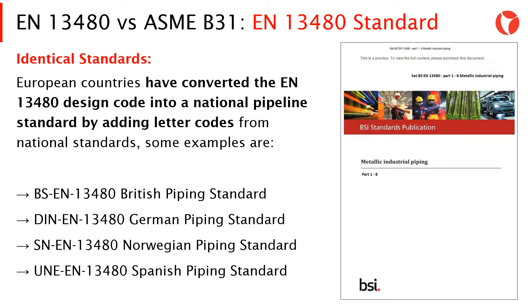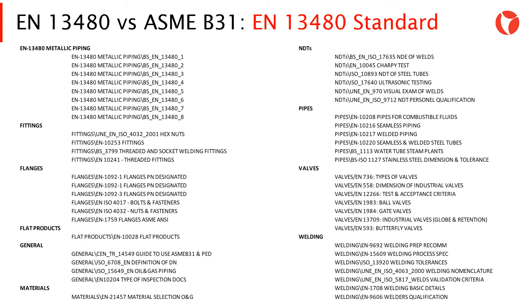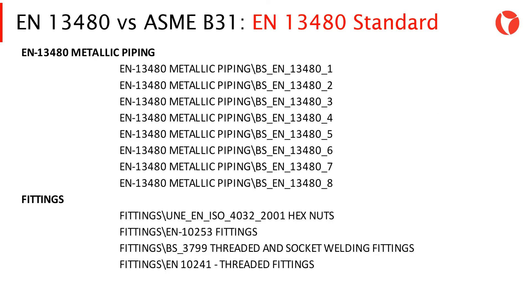European countries have converted the EN 13480 design code into a national pipeline standard by adding national letter codes — for example, BS EN 13480 as the British piping standard or DIN EN 13480 as the German piping standard. The EN 13480 standard is formed by 8 parts: Part 1 general aspects, Part 2 materials, Part 3 design, Part 4 fabrication and installation, Part 5 inspection and NDT, Part 6 underground piping systems, Part 7 conformity assessment, and Part 8 piping systems designed with aluminum.